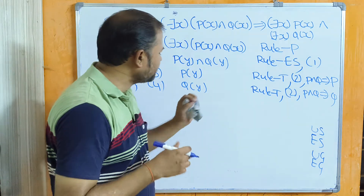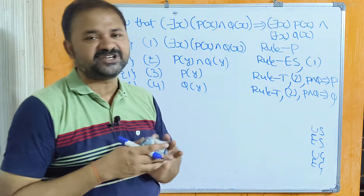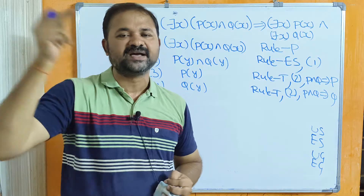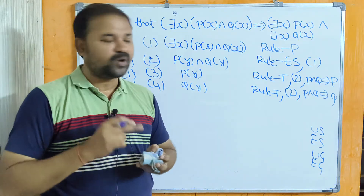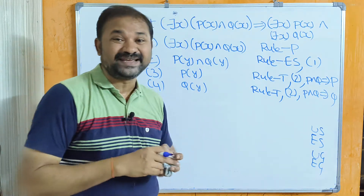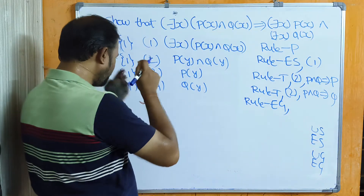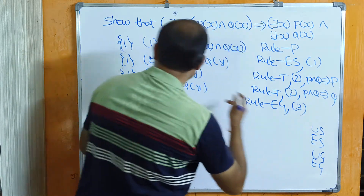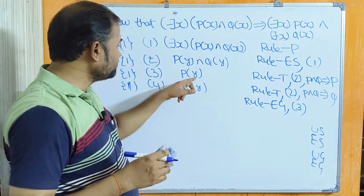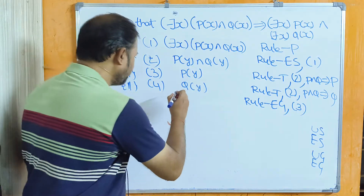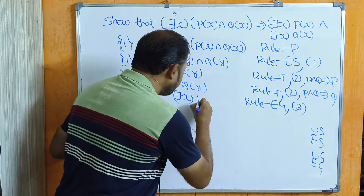Now we have P(y) and Q(y). The target result is ∃xP(x) ∧ ∃xQ(x). We need to add the existential quantifier before P(y), so we apply Rule EG on statement formula number 3. We replace y with x and add the existential quantifier, giving us ∃xP(x) as statement formula number 5, from premise 1.